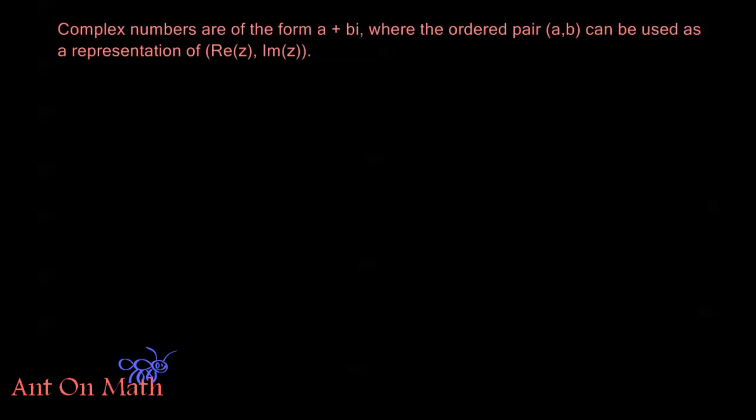Now complex numbers are of the form A plus BI and we call this BI the imaginary part of the complex number. This A is the real part of the complex number, and here B is going to be a real number and this I kind of acts as a qualifier. It says this is how much imaginary part I have in my complex number.